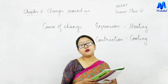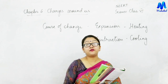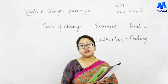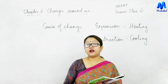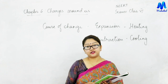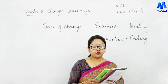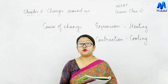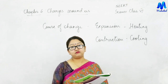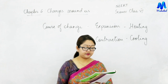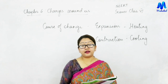Number three: dissolving sugar in water. Dissolving sugar in water forms a new solution, but can you reverse it? In the previous chapter we learned about separation of substances — we can separate sugar and water by evaporation and condensation. So this is a reversible change. Number four: the cooking of food. Once raw food is cooked, can you bring back the raw materials? No — so this is an irreversible change.